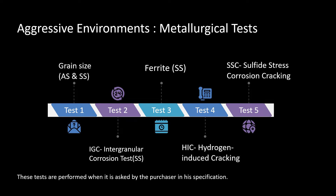In the process industry, aggressive environments refer to the material's internal and external atmosphere, environmental conditions, the fluid passing through pipes, and the process conditions. With respect to all these factors, we define aggressive environments. Metallurgical tests are required to check the integrity of materials against ASTM standards — verifying composition, identifying potential corrosion types, and detecting defects.